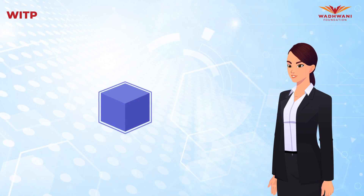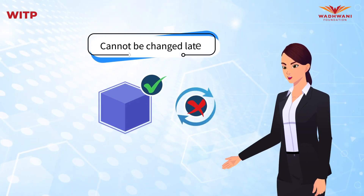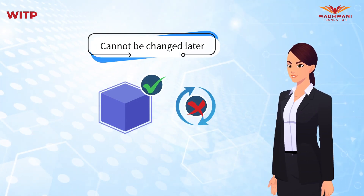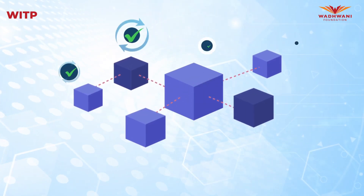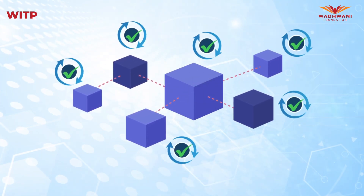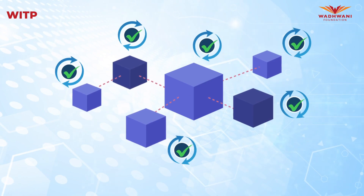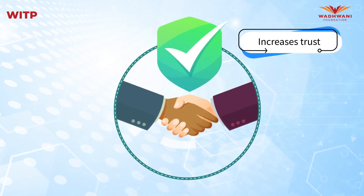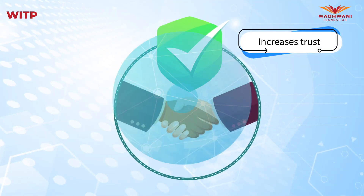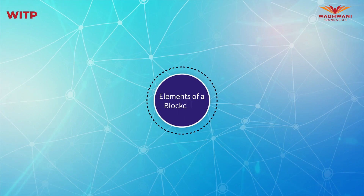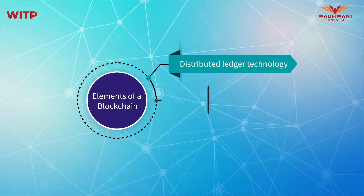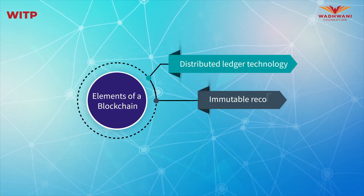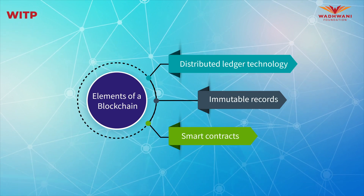Once a block or record is created, it cannot be changed later without changing all subsequent blocks. The fact that a block once formed cannot be changed increases trust among different parties. The key elements of a blockchain include distributed ledger technology, immutable records and smart contracts.